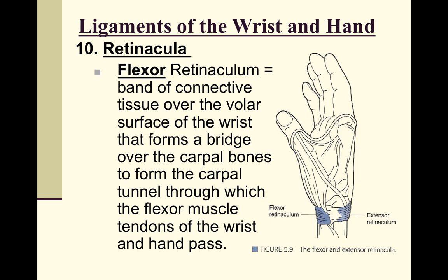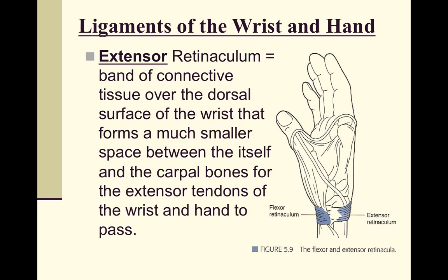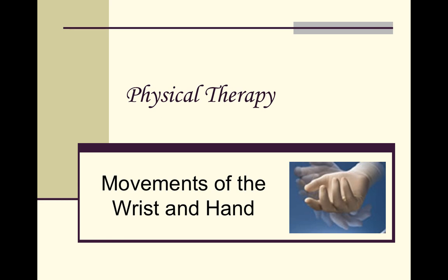Finally, the wrist and hand have retinacula similar to the foot. The flexor retinaculum is clinically important because it forms the roof of the carpal tunnel, through which approximately eight tendons, a nerve, and arteries and blood vessels pass. The extensor retinaculum on the back of the hand is smaller but creates a tunnel allowing the extensor tendons of the wrist and hand to pass through.